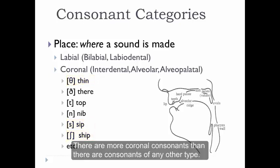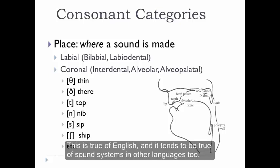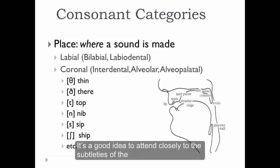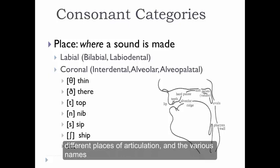There are more coronal consonants than there are consonants of any other type. This is true of English, and it tends to be true of sound systems in other languages too. It's a good idea to attend closely to the subtleties of the different places of articulation and the various names that some people put to some of those places.